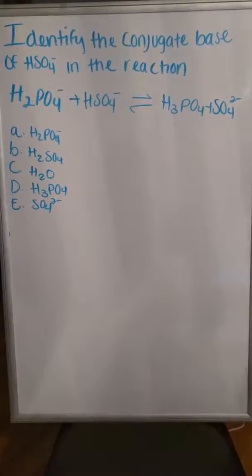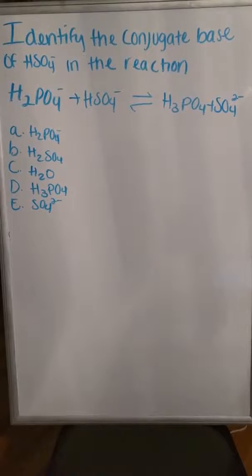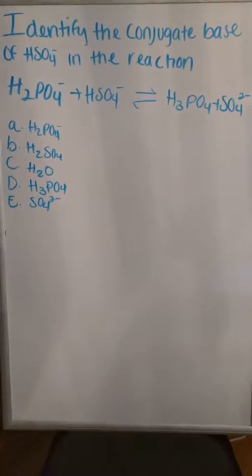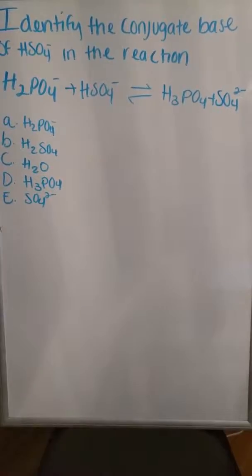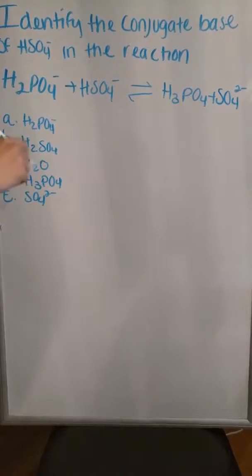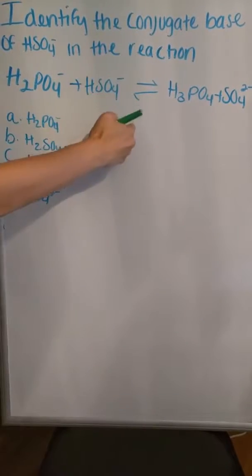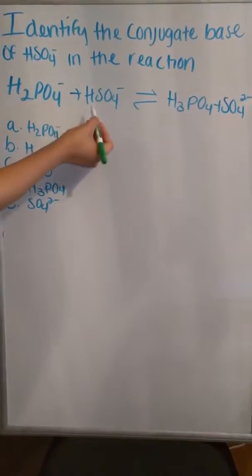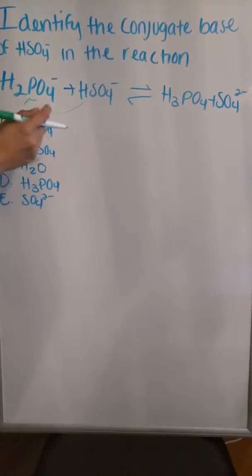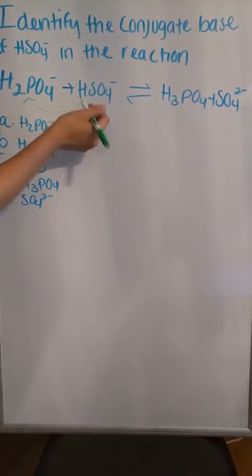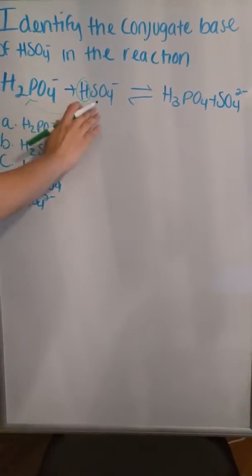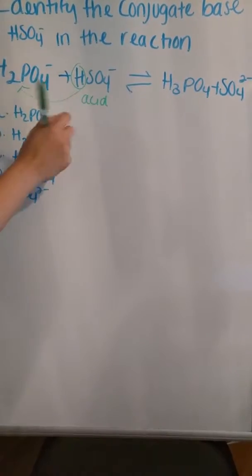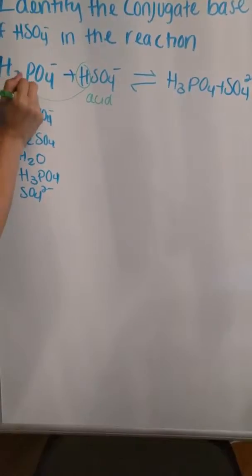Identifying the conjugate base of HSO4⁻ in the reaction H2PO4⁻ + HSO4⁻ → H3PO4 + SO4²⁻. First, we need to identify the acid. HSO4⁻ donates its proton to H2PO4⁻, making HSO4⁻ the acid and H2PO4⁻ the base, since it accepts the proton. This produces SO4²⁻ as the conjugate base.